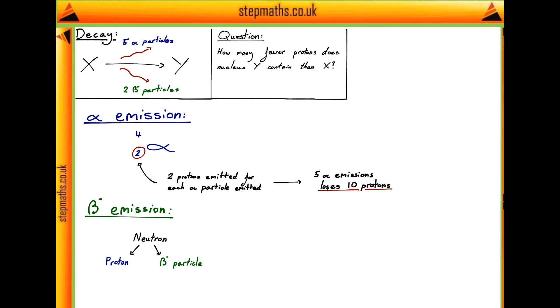Now an easy way of remembering this is by using conservation of charge. So we know that initially our neutron has a charge of 0, and our proton has a charge of +1, and our beta minus particle has a charge of -1.